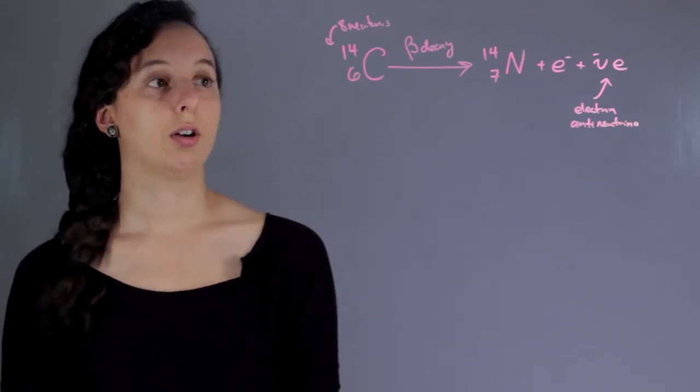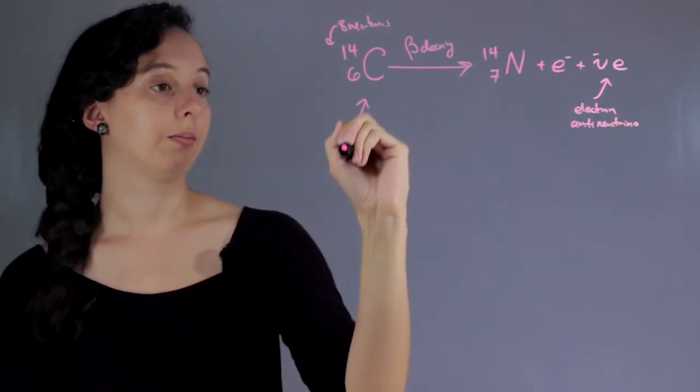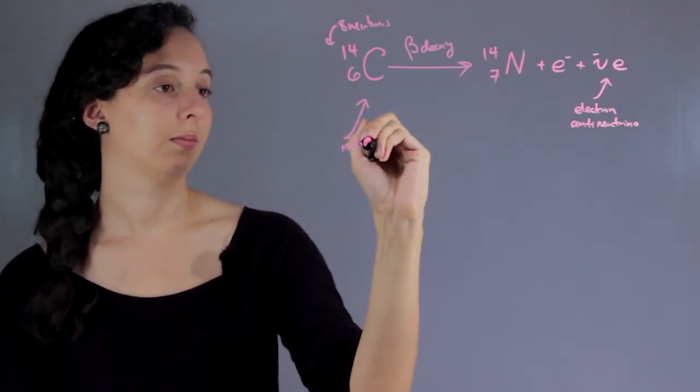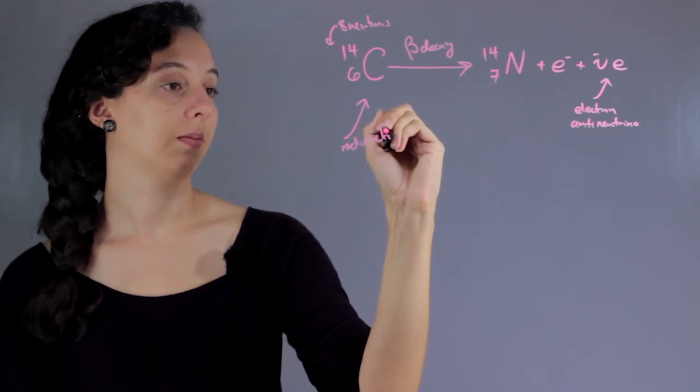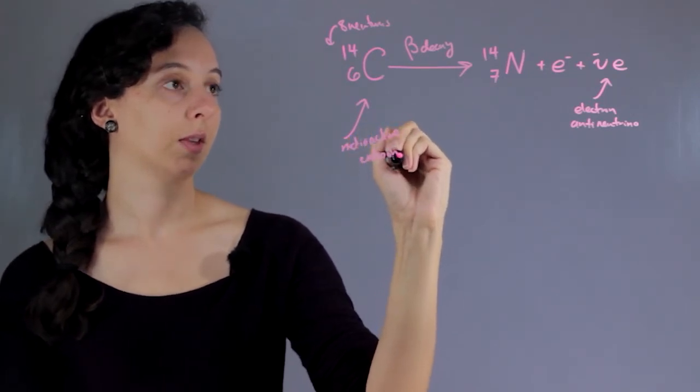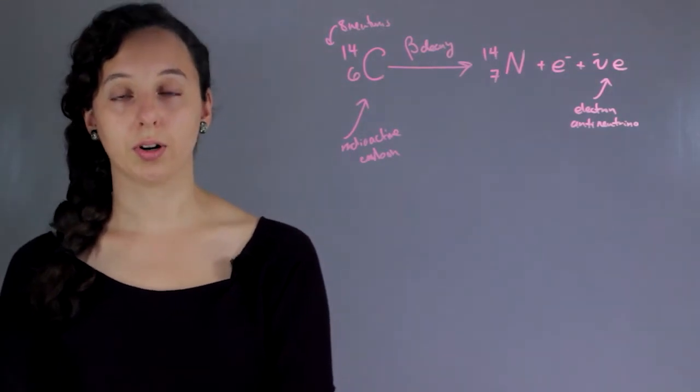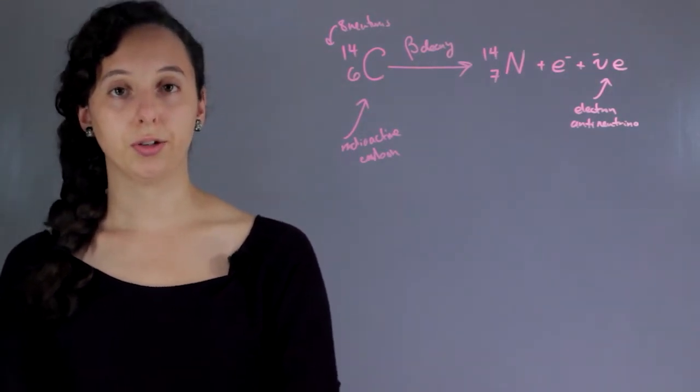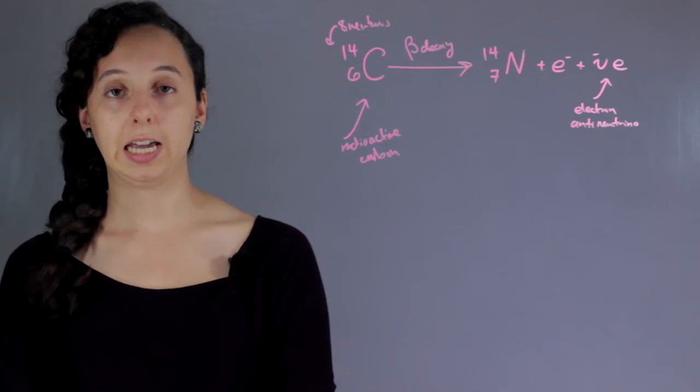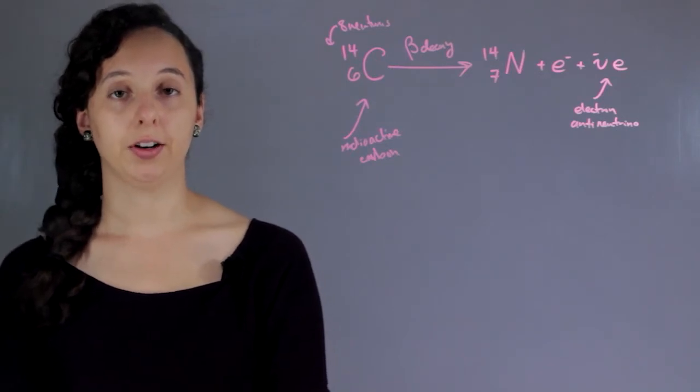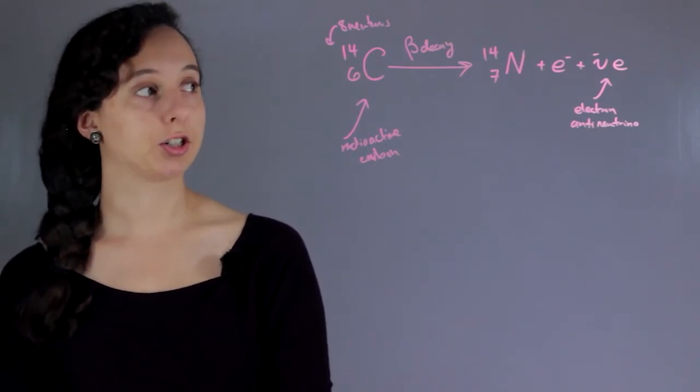So this is your radioactive carbon, and the short answer is that it turns into nitrogen through beta decay. This is not a very common process, it's very rare, actually.